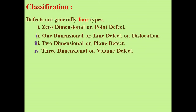Now I classify the types of defects. Depending on dimension, there are four types of defects: number one, zero-dimensional or point defect; number two, one-dimensional or line defect or dislocation; number three, two-dimensional or plane defect; and number four, three-dimensional or volume defect.